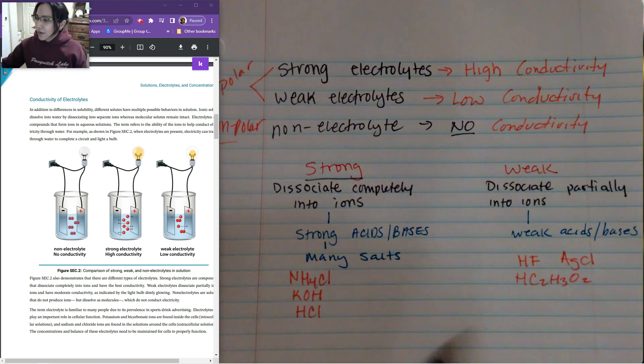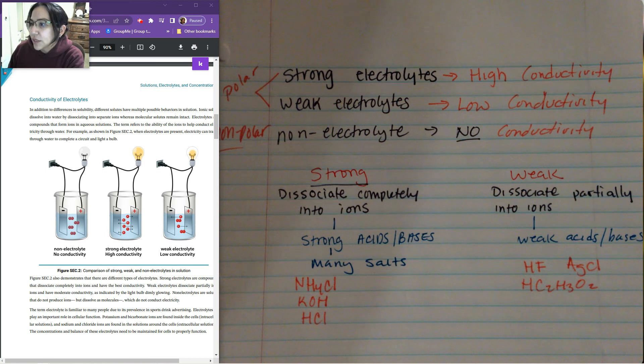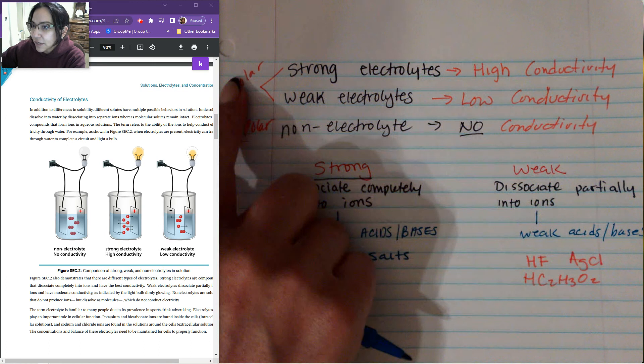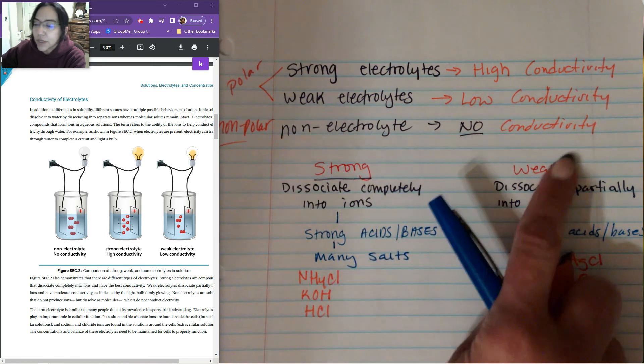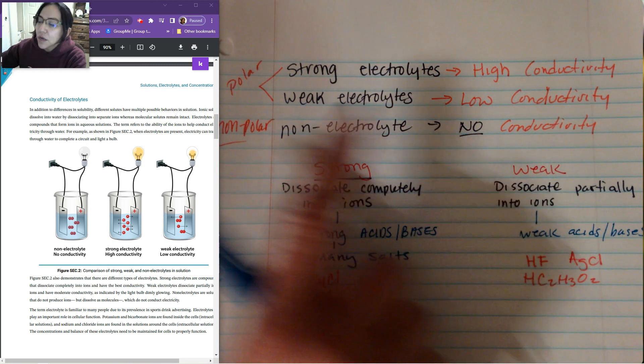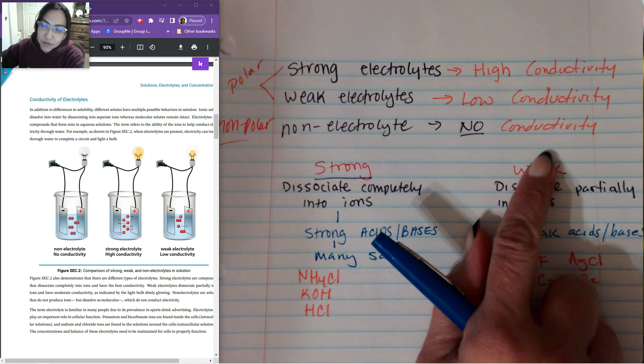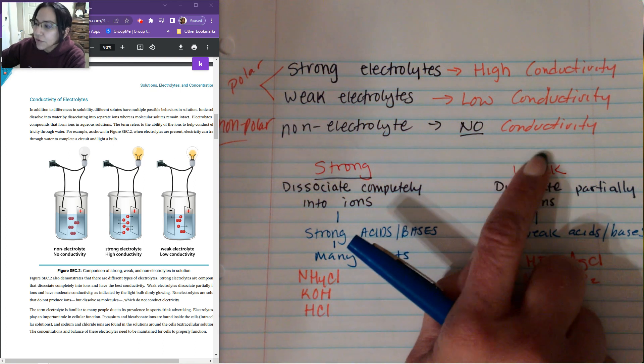So I went ahead and I wrote down a couple of things that we were talking about with our polarity and our electrolytes. So when it comes to electrolytes, strong electrolytes produce high conductivity and they're polar. Weak electrolytes are also polar, but they produce low conductivity. Non-electrolytes are nonpolar and they have no conductivity. So sugar is a good example of non-conductive.